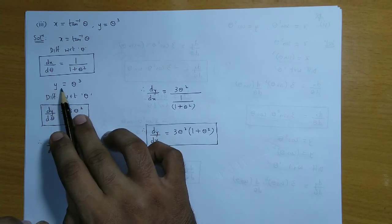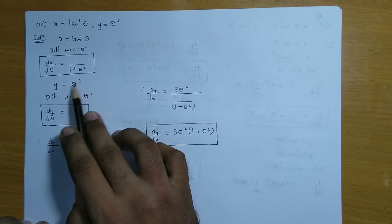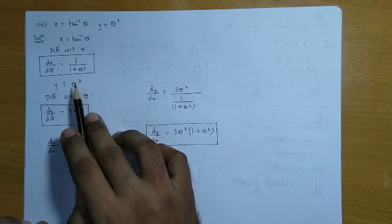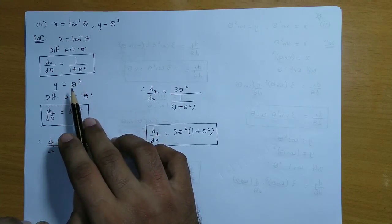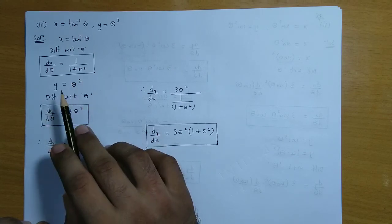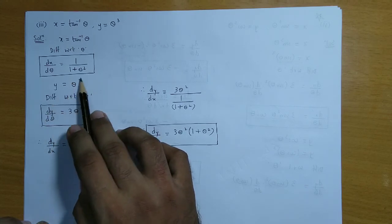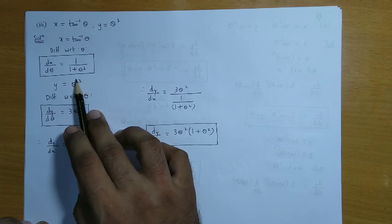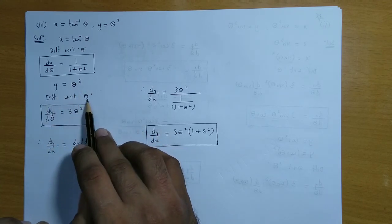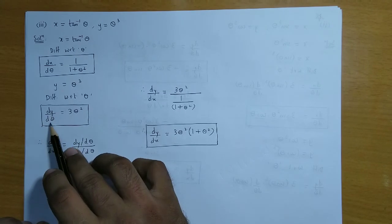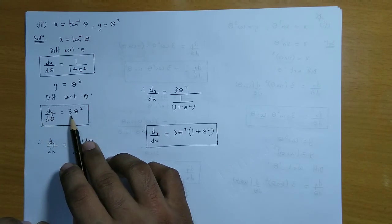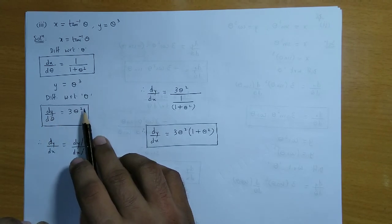Now y = θ³, which is like x³ — an x raised to n form. Using the formula: derivative of xⁿ = n·xⁿ⁻¹. Differentiating with respect to θ, we get dy/dθ = 3θ².